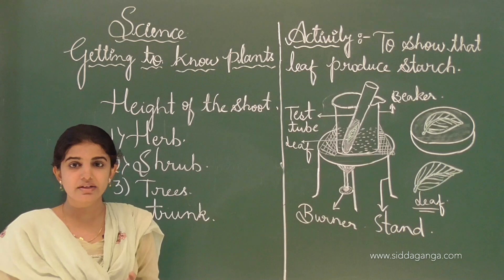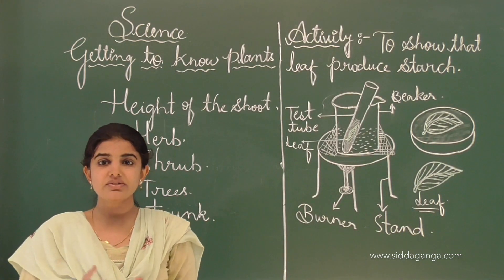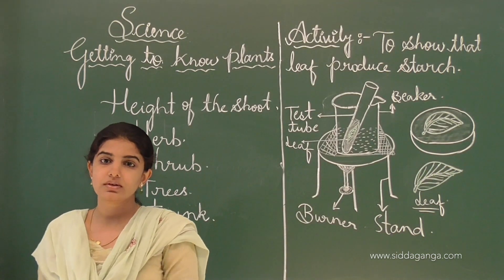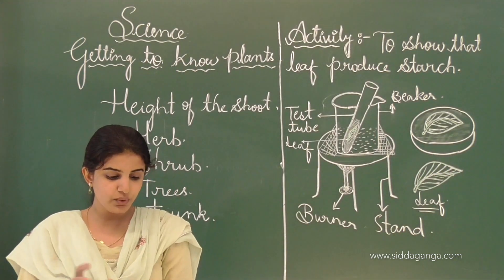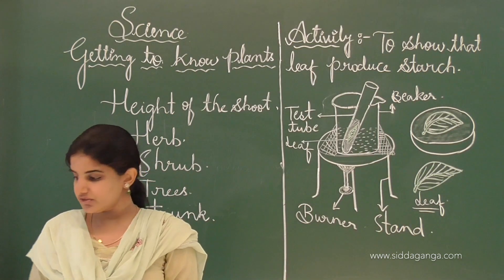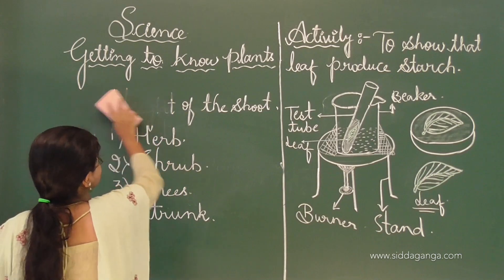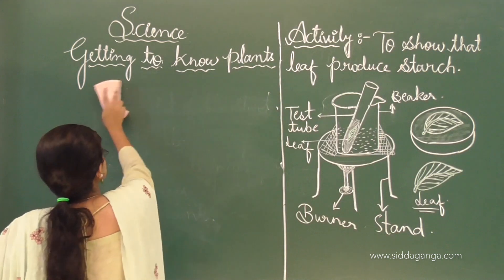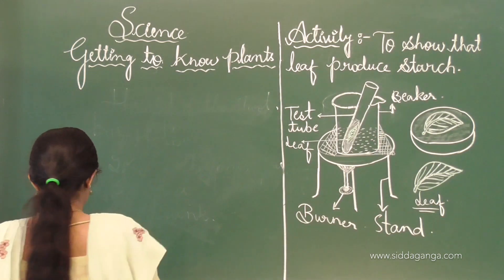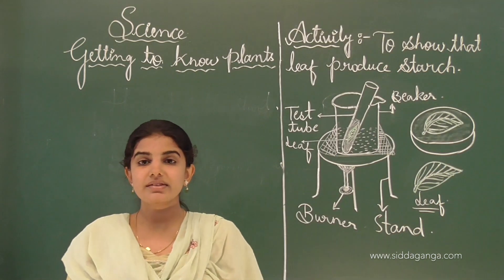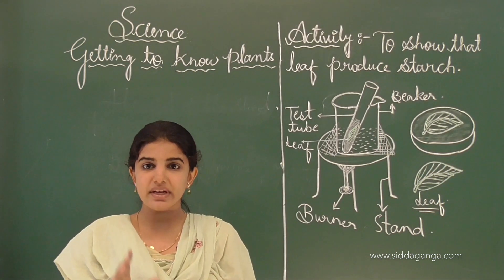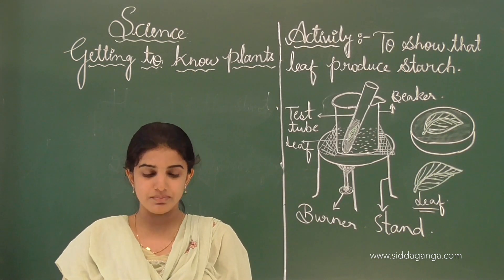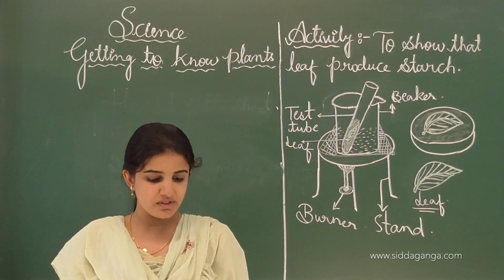In your textbook there is one activity. A table is given for you to fill up. I will read the table and give you examples to write down. The categorization of the plant is based on the height of the shoot — nothing but height of the stem. The plant's name is given in the first column.